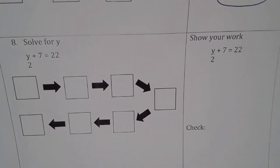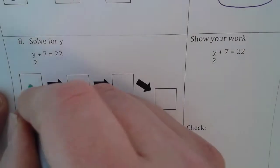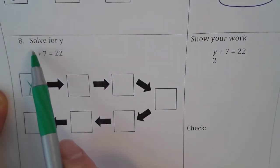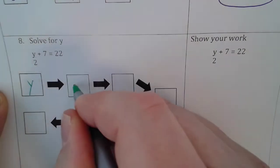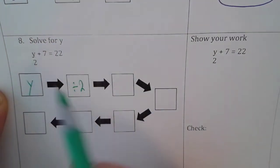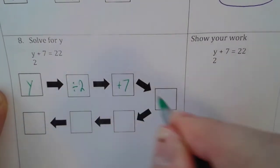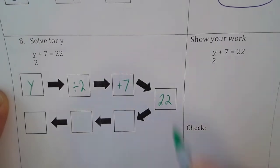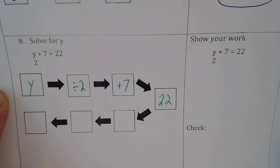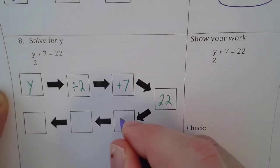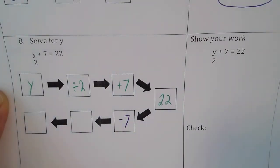Next question. This one, our variable in the problem is y. So y is being divided by 2, and then it's being added by 7. And our solution is 22. So you would take your 22, you would subtract by 7.